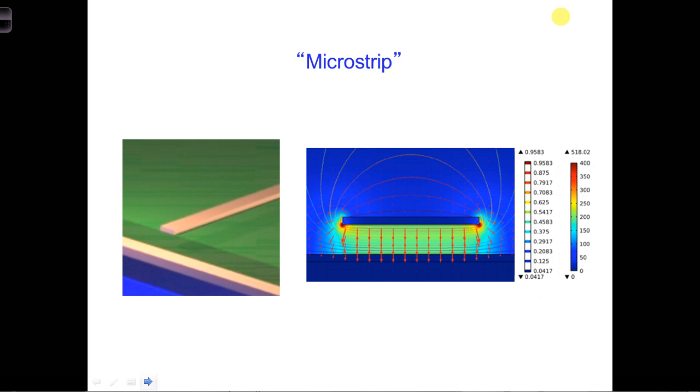But what about a transmission line like the microstrips you see on a regular circuit board? They have a nice flat surface that we could put our airplane on. And this is a TEM transmission line, and it's one of the ones that we looked at at the very beginning of this class.